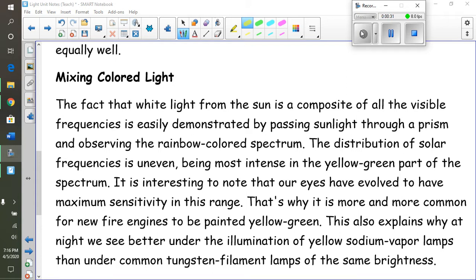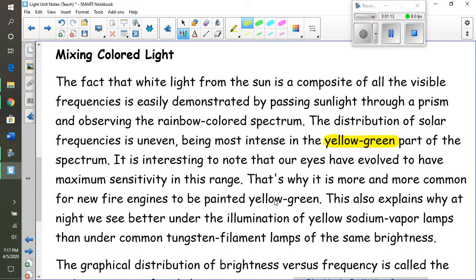First off, the sun is not yellow - the sun is white - and we'll talk about why that is in a few minutes. But even though the sun is white, it kind of prefers yellow and green, the yellow-green part of the spectrum. You may have noticed that people who are flagging traffic during construction wear yellow-green vests. That's because those vests are brightest under sunlight. It's also interesting to note that our eyes have evolved to have their maximum sensitivity in that range. Our eyes are tuned to our sun.